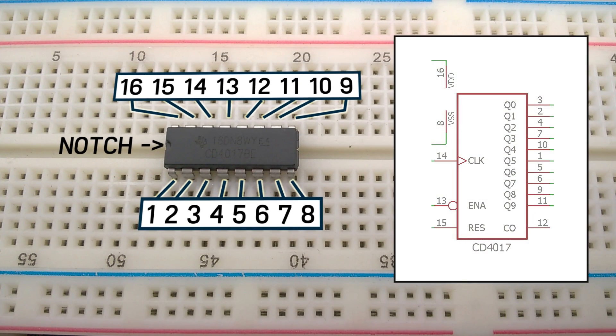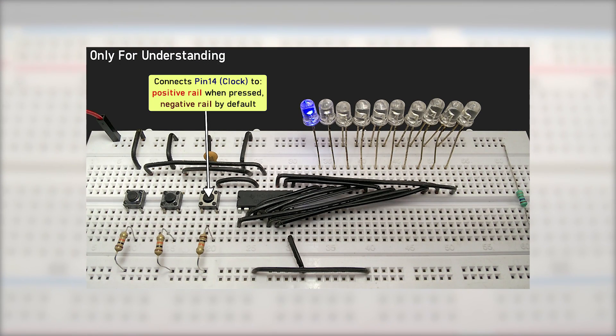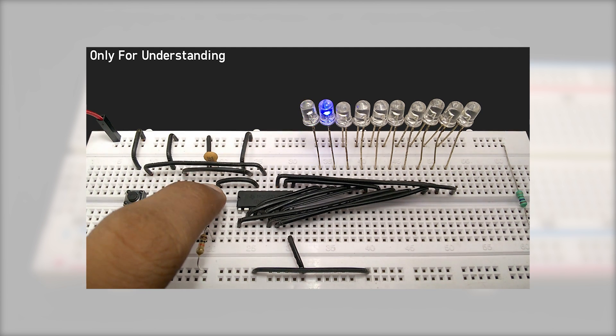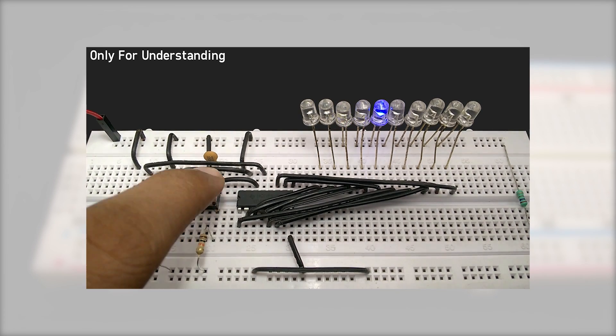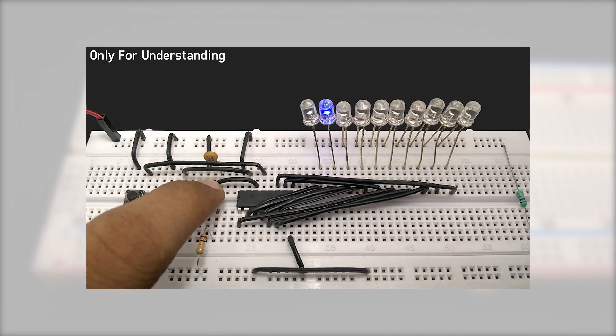It has 10 outputs. You can see the corresponding pin numbers to each of these outputs in this diagram. Each time the clock input pin of the 4017 IC detects a rise in voltage, it switches the output to the next sequential output. Something like this.